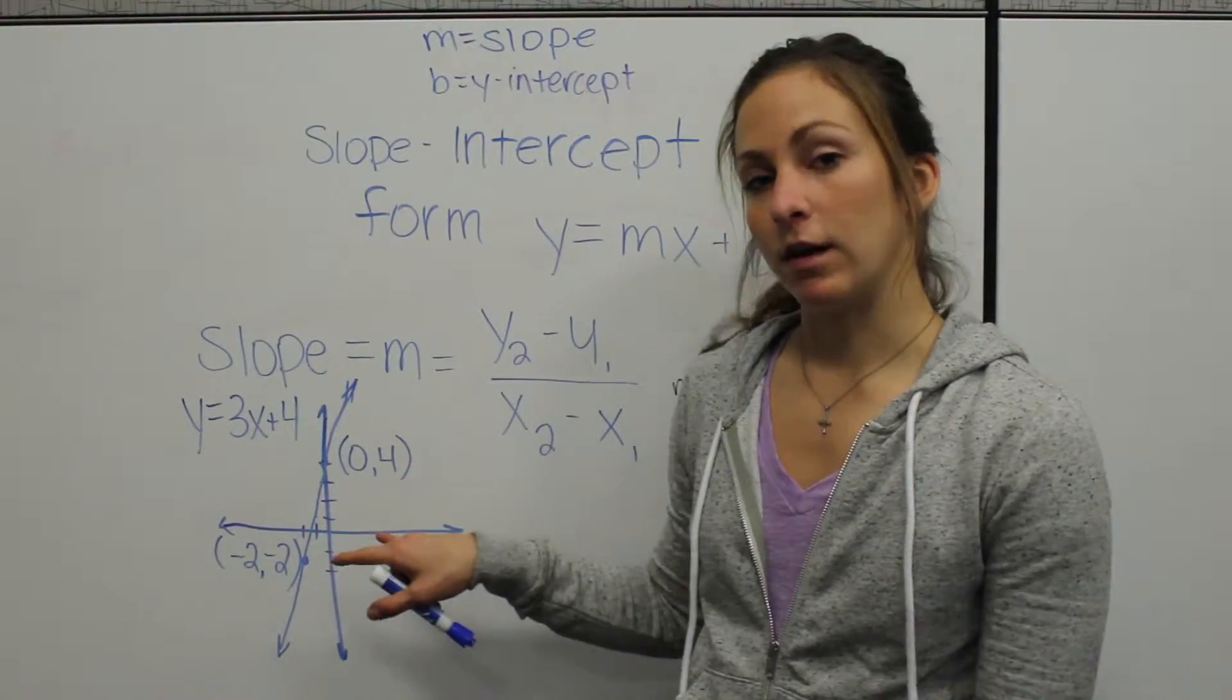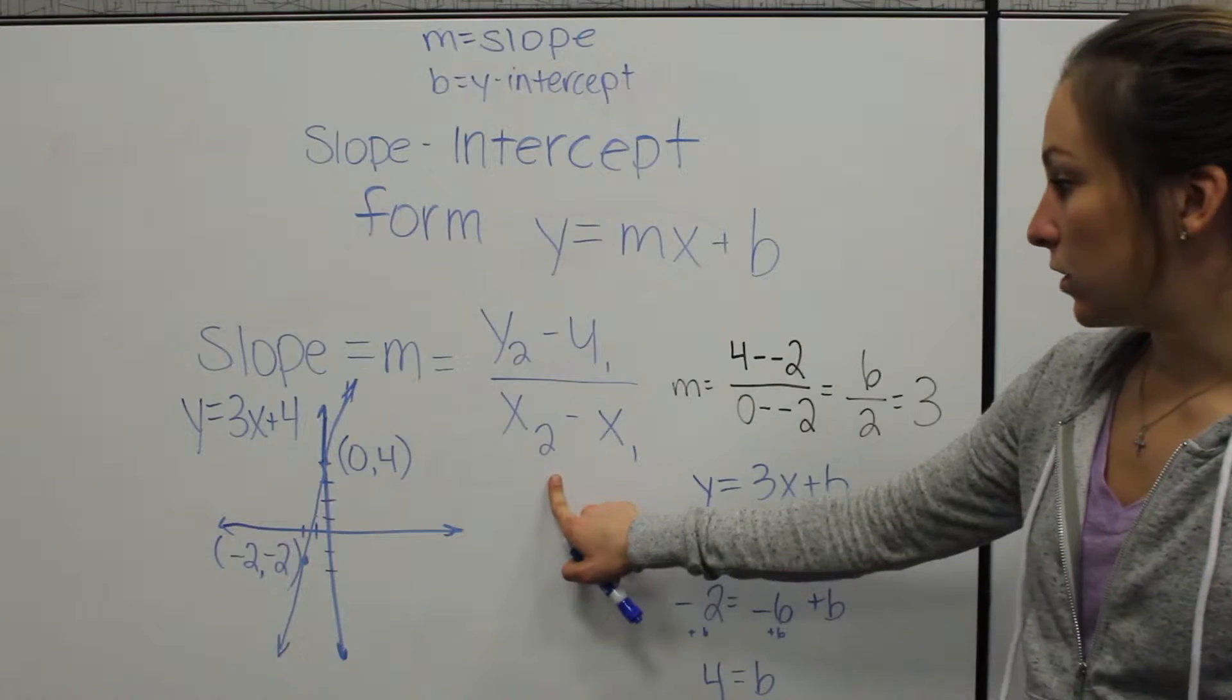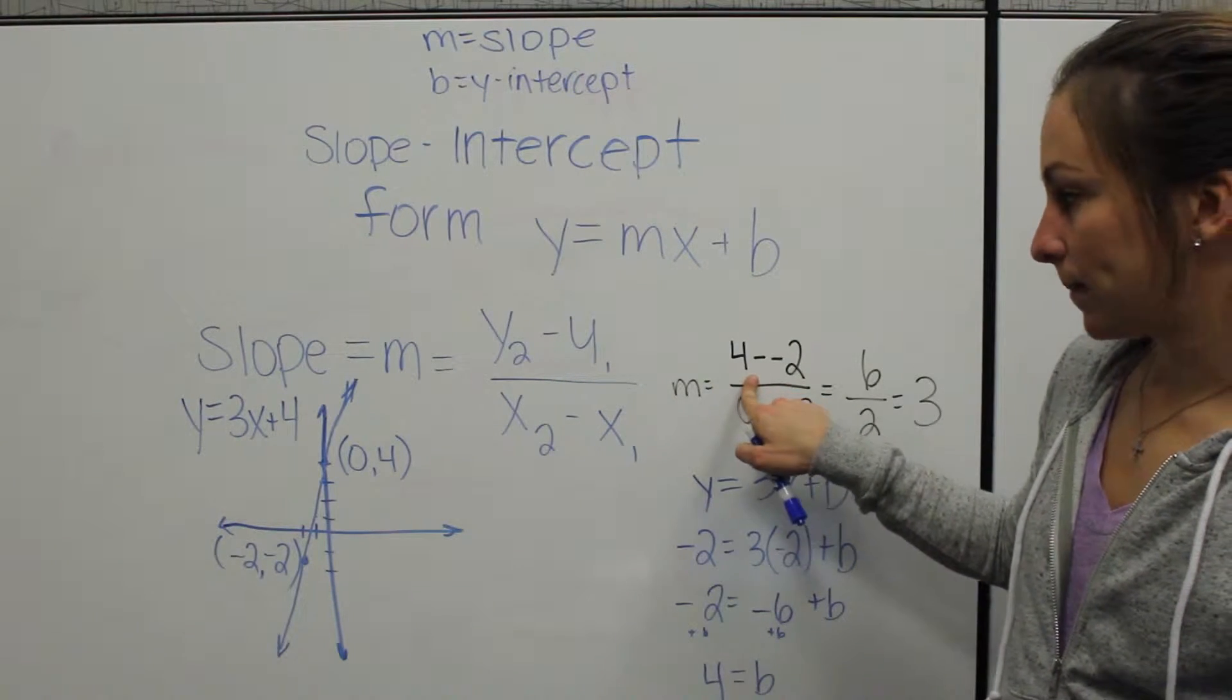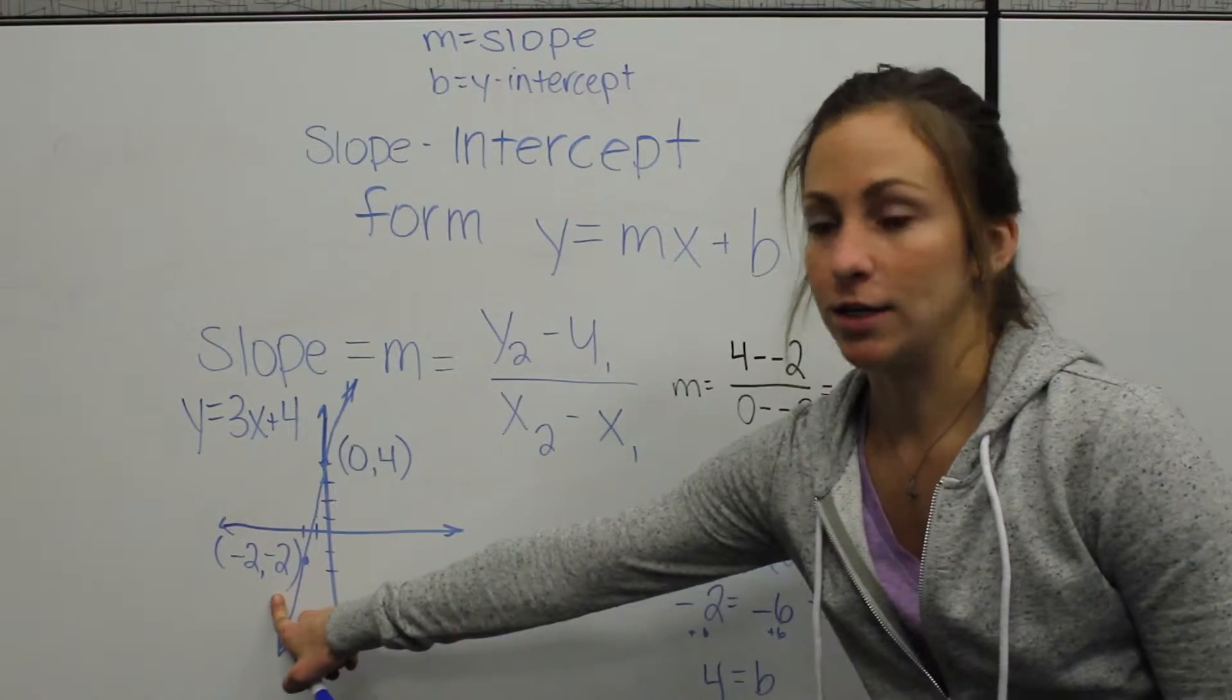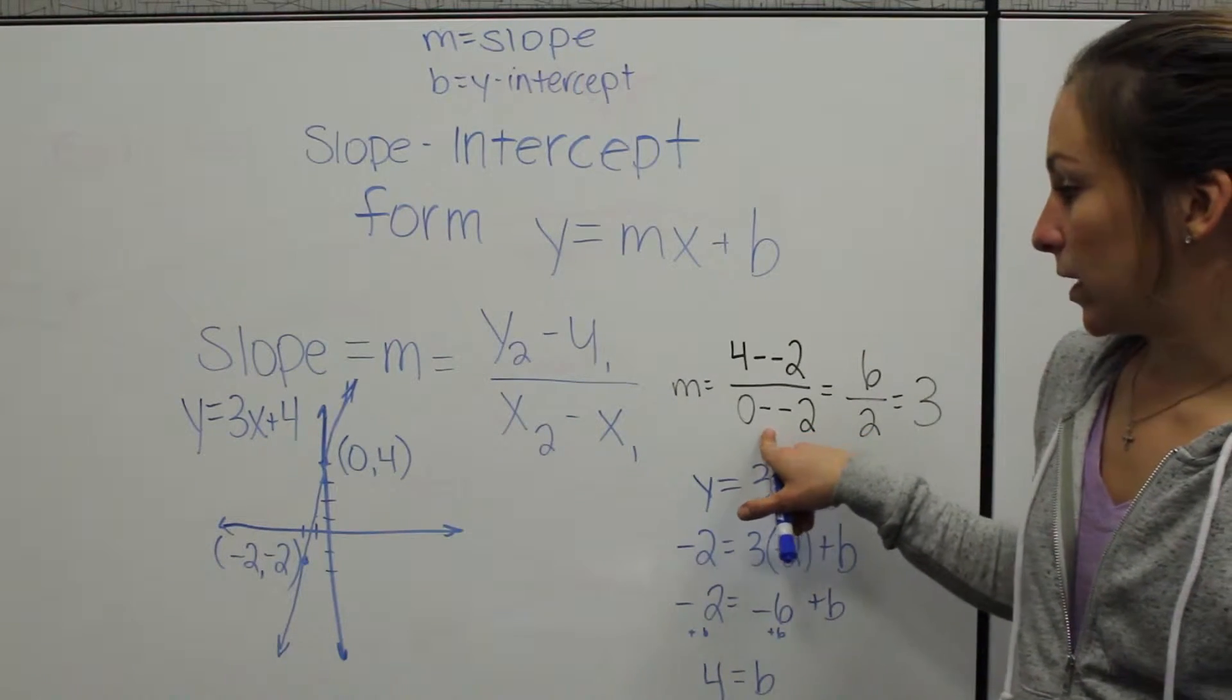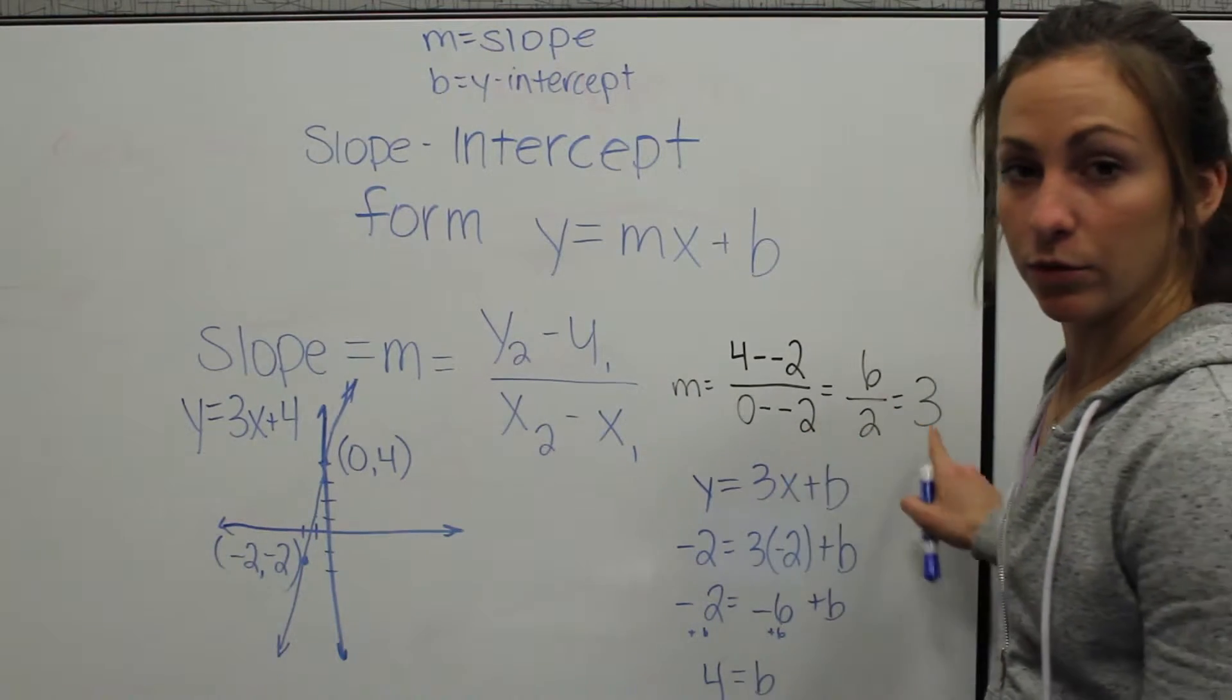When we plug those given values into this equation, we can calculate slope. So we took y2, which was 4, and subtracted minus 2, which was our y1. Then we plugged in 0 minus negative 2, and we got our slope to equal 3.